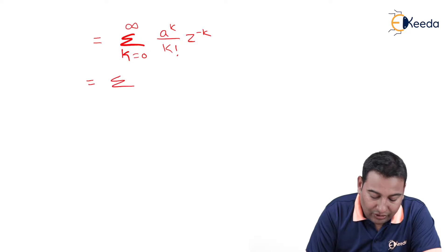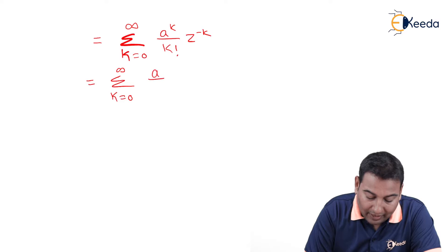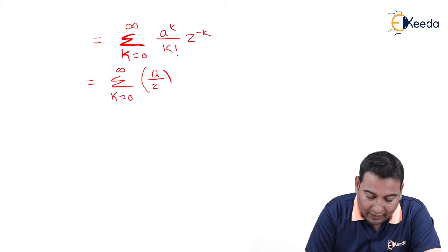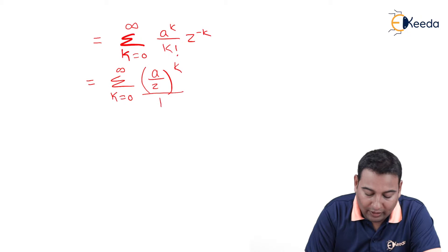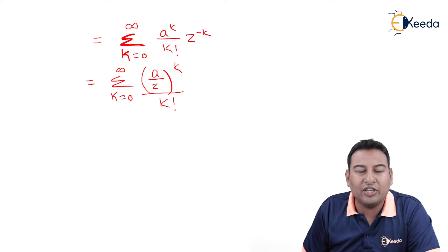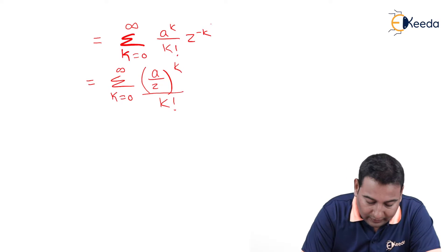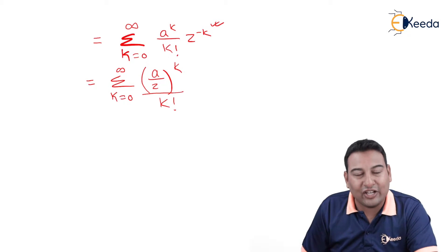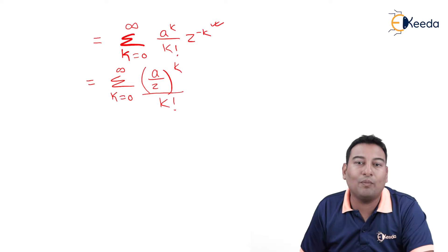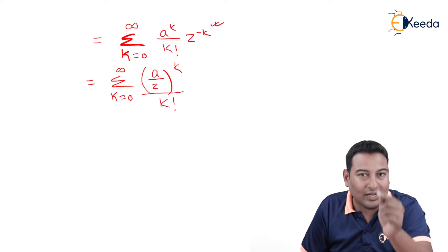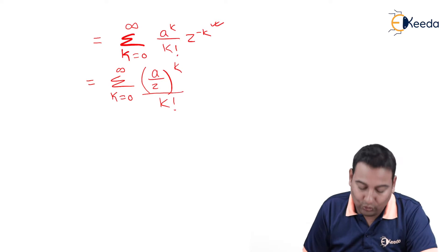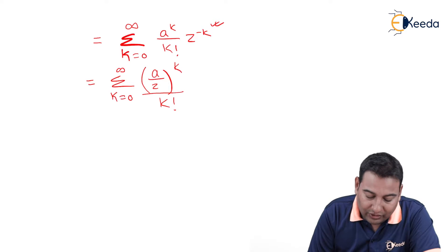Let's rearrange the terms. From k=0 to infinity, we write a^k into z^(-k) upon k factorial. The z^(-k) is in the denominator, so it becomes z^k in the denominator, giving us (a/z)^k upon k factorial.